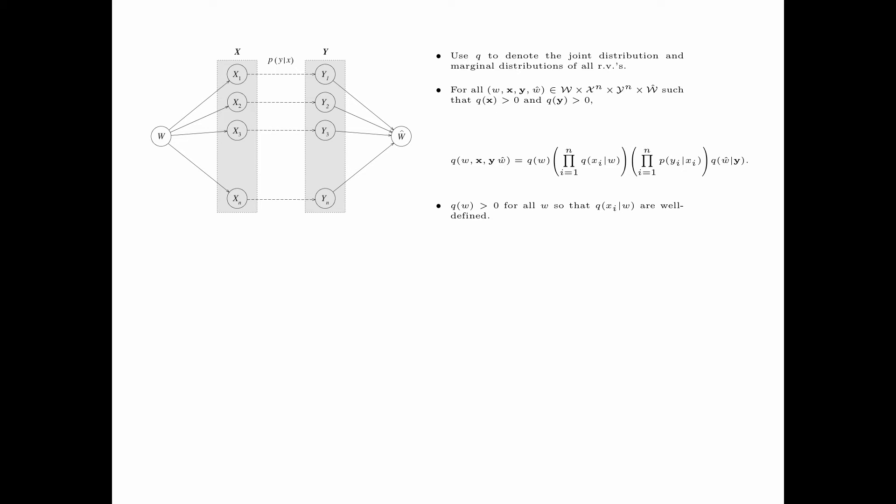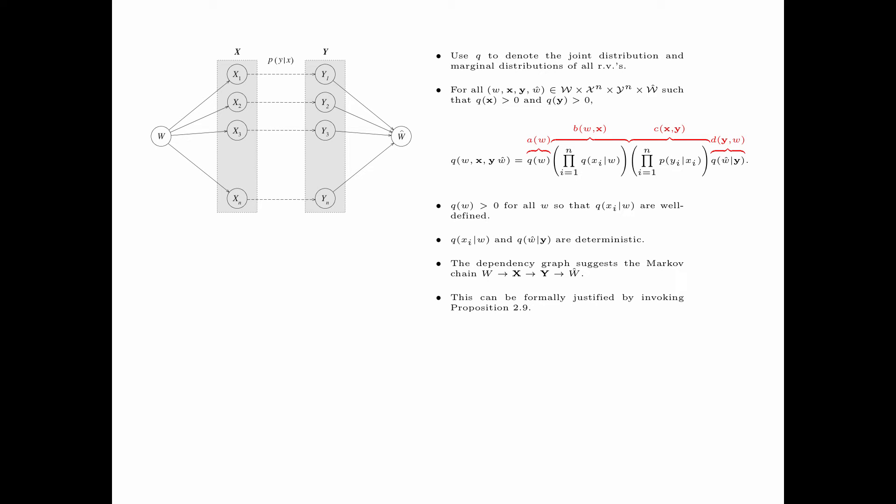Note that q(W) > 0 for all W because the message is chosen uniformly, so q(Xi|W) is well defined. Also note that q(Xi|W) and q(Ŵ|Y) are deterministic. The dependency graph suggests the Markov chain W → X → Y → Ŵ, and this can be formally justified by invoking Proposition 2.9. The first term q(W) depends only on W; the second term depends only on W and X; the third term depends only on X and Y; and the last term depends only on Y and Ŵ.